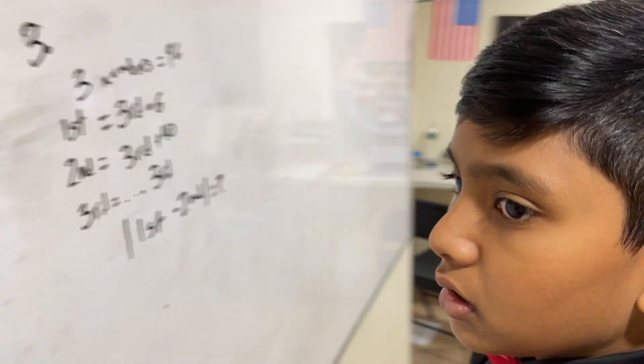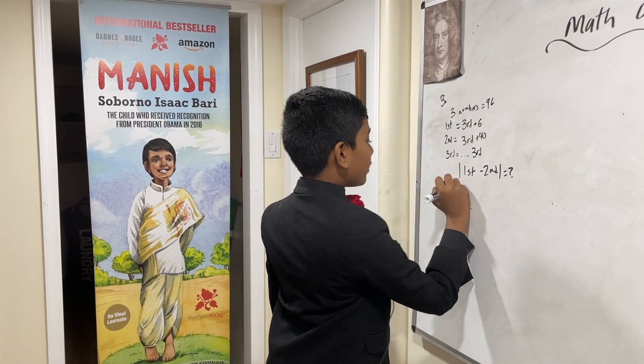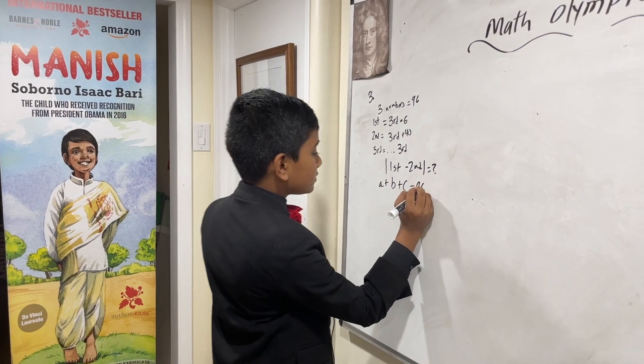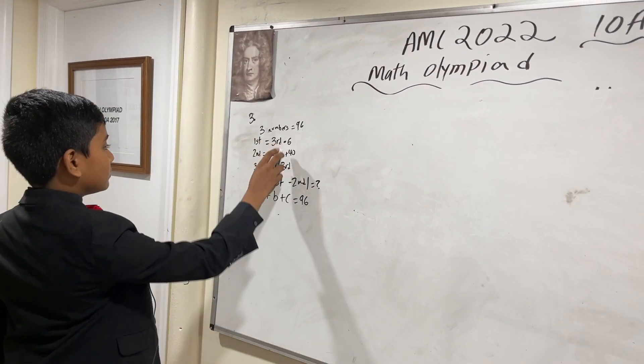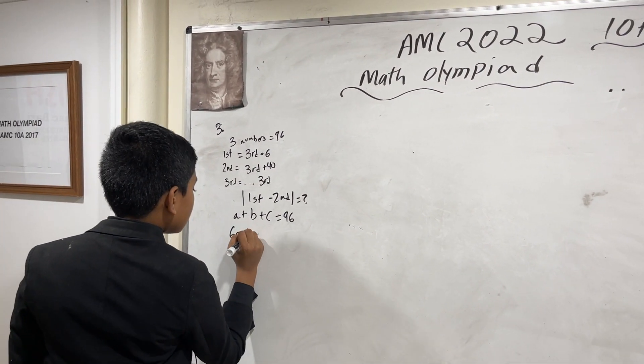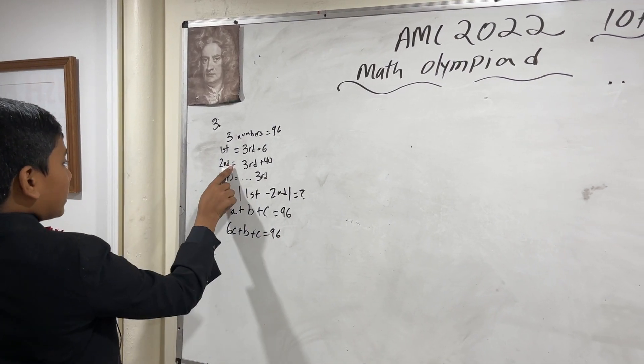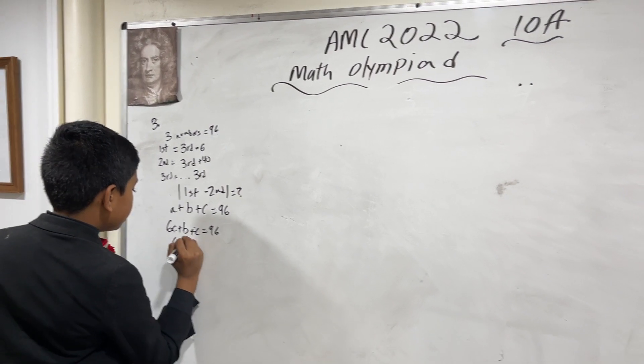How do we do this? Well, let's express these numbers as a plus b plus c. Now we know that the first number is six times the third number, so a is 6c. And we know the second number is the third plus 40, so b is simply c plus 40.